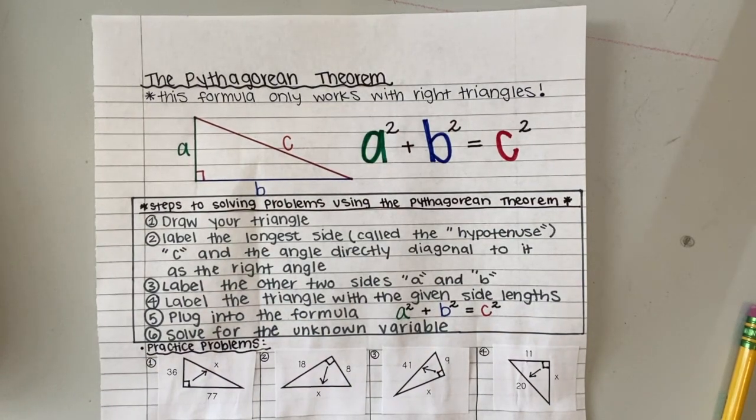In this video, I'm going to introduce you to something called the Pythagorean Theorem. The Pythagorean Theorem is really just a fancy name for telling us how to find different side lengths in right triangles.